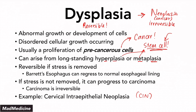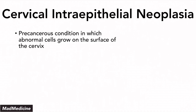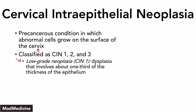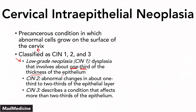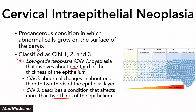Let's talk about CIN to wrap up this lecture. CIN is a precancerous condition — cervical intraepithelial neoplasia — in which you have abnormal growth on the surface of the cervix. You can classify this as CIN 1, 2, and 3. CIN 1 is the low-grade neoplasia, where dysplasia involves about one-third of the thickness of the cervical epithelium. In CIN 2, more abnormal changes occur affecting one-third to two-thirds of the epithelial layer. CIN 3 is severe dysplasia, describing a condition that affects more than two-thirds of the epithelium.